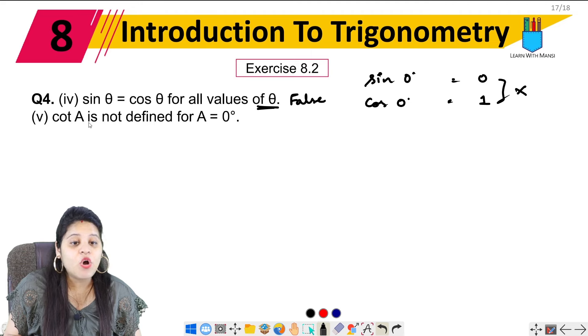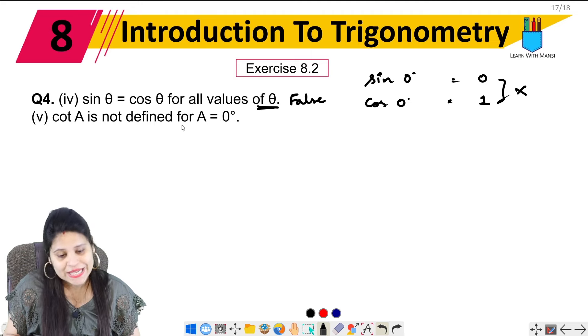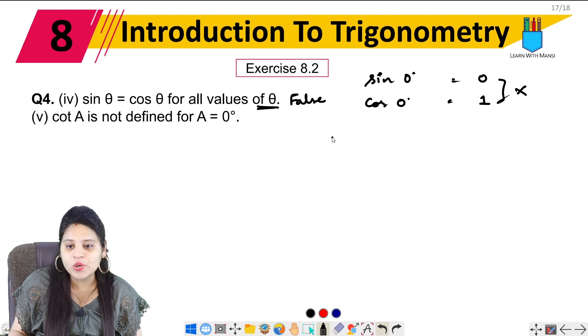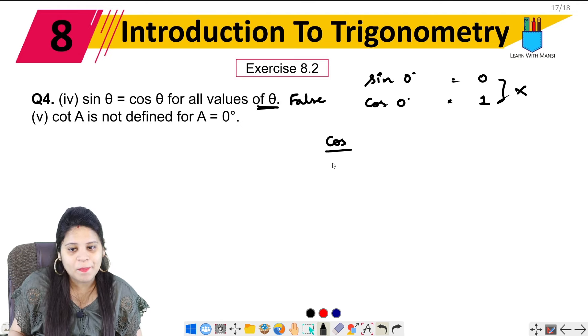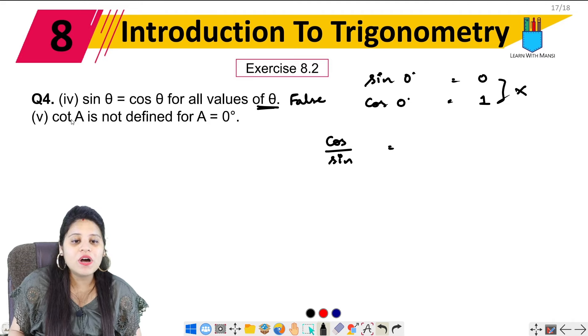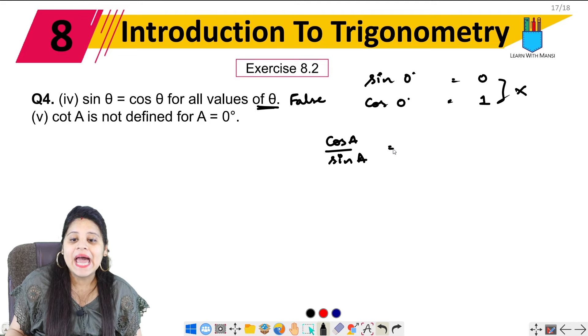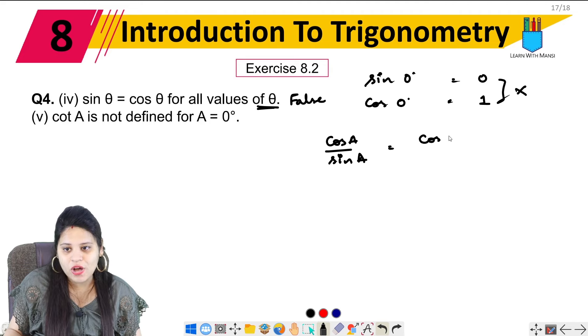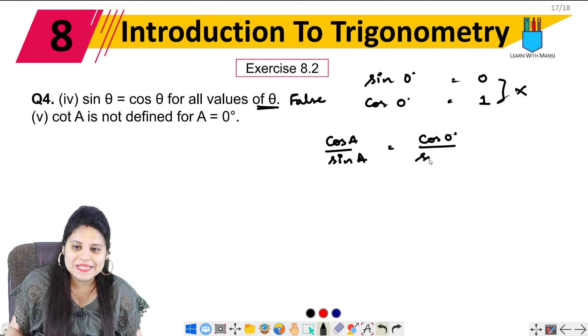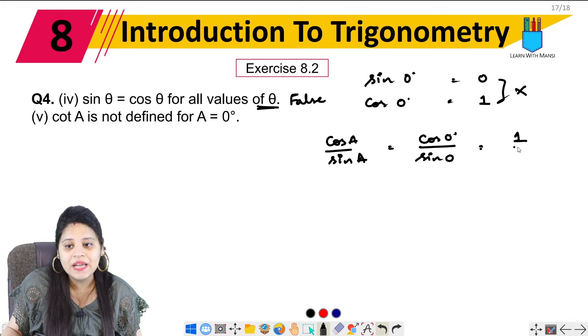Fifth part: cot A is not defined for A equals 0 degrees. Let's check. Cot A can be written as cos upon sin. So cot A = cos A upon sin A. For 0 degrees, cos 0 degree upon sin 0 degree. Cos 0 is 1, sin 0 is 0. So that means this is not defined.